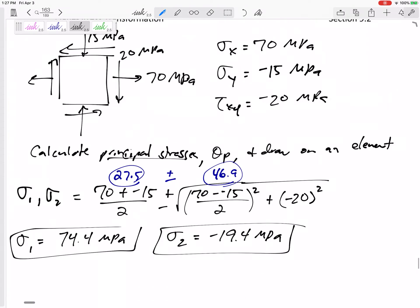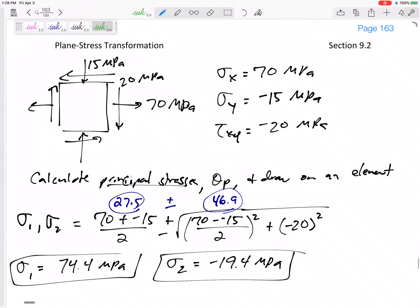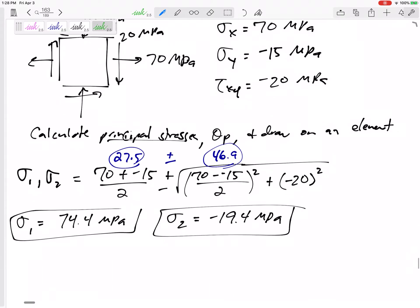No matter what orientation I'm at, I'm never going to get above 74.4, and no matter what orientation I'm at, I'm never going to get below a negative 19.4. You can see at our original orientation, let's make sure that these are in between those values. Alright, 70, yeah, that's not above, and the negative 15, that's not below.